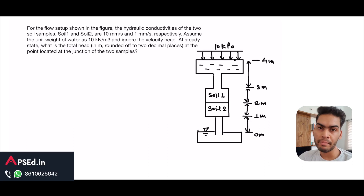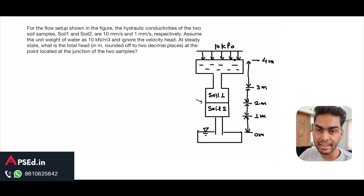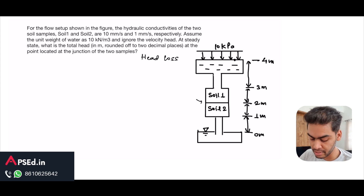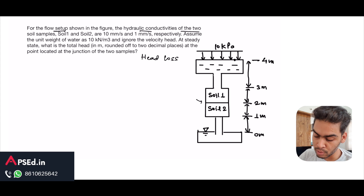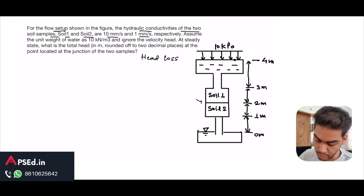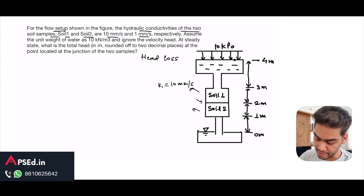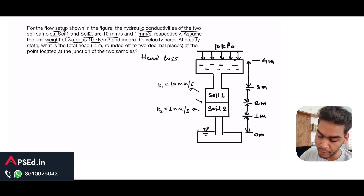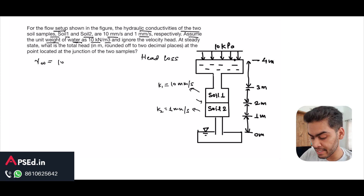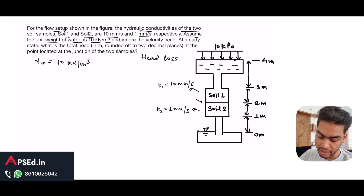Let's see this question from GATE 2023 from soil mechanics. This question will give you an idea about how we solve for stratified soils and how we tackle head loss, which is very confusing to a lot of students. The hydraulic conductivities of the two soil samples — soil 1 and soil 2 — are 10 mm/s and 1 mm/s respectively. The unit weight of water gamma_w is given as 10 kN/m³.